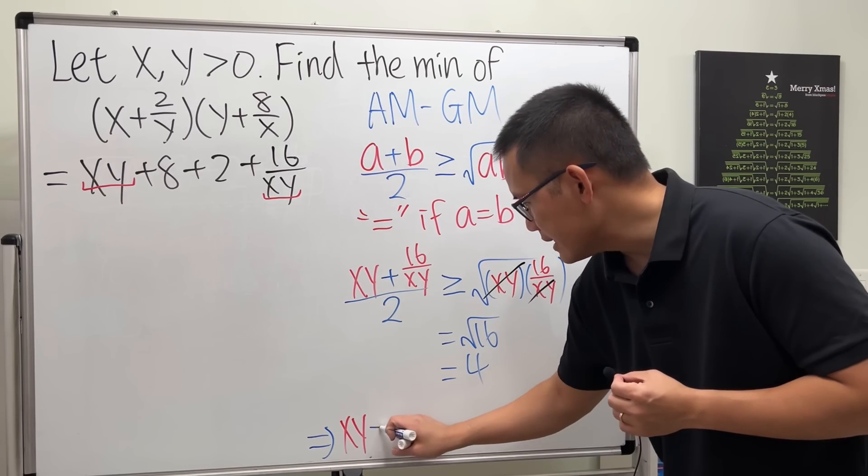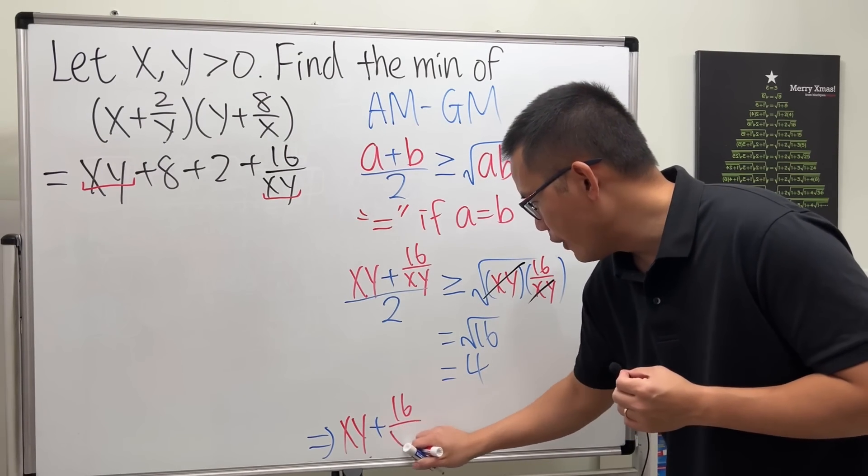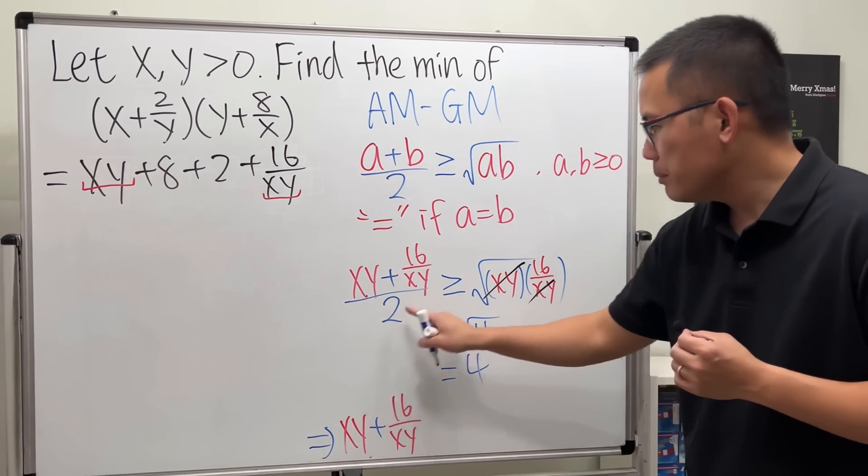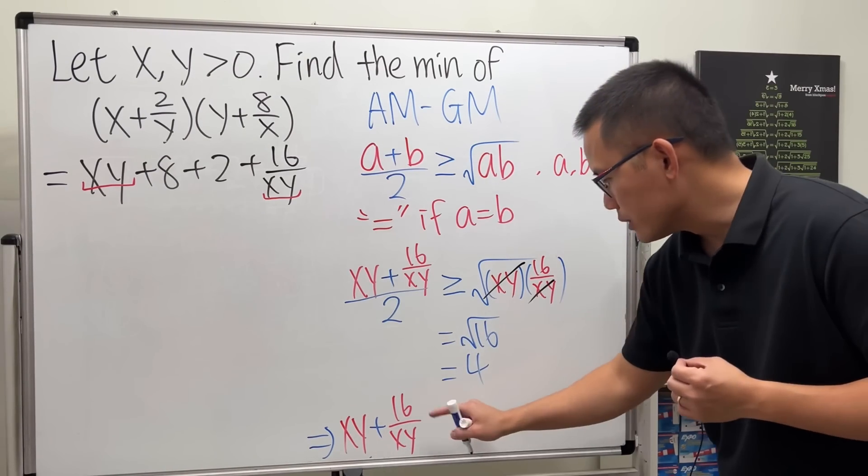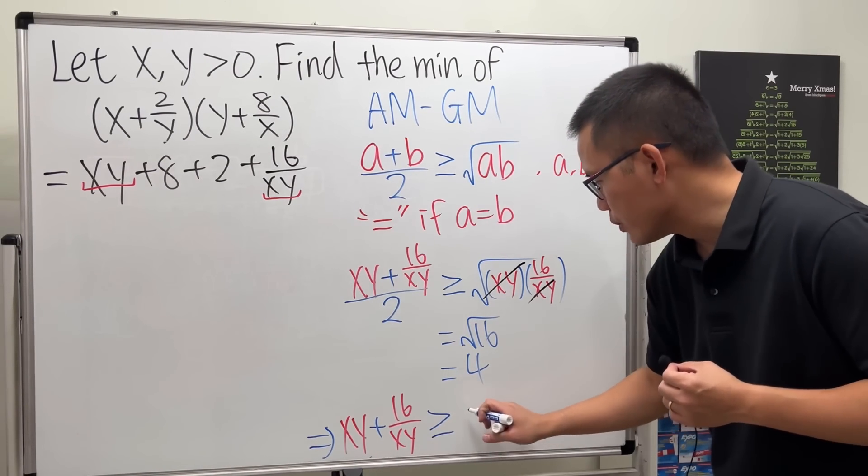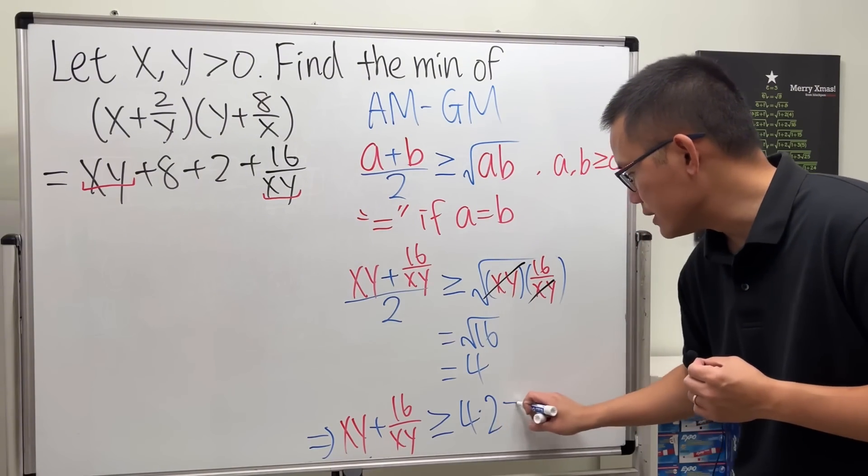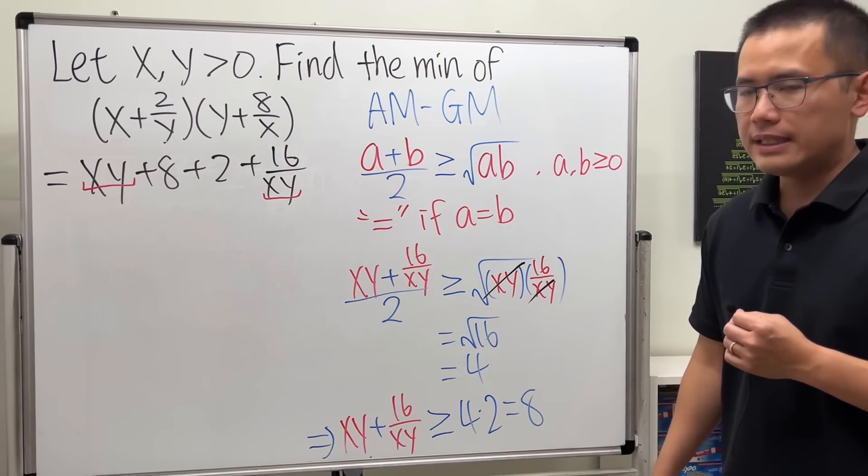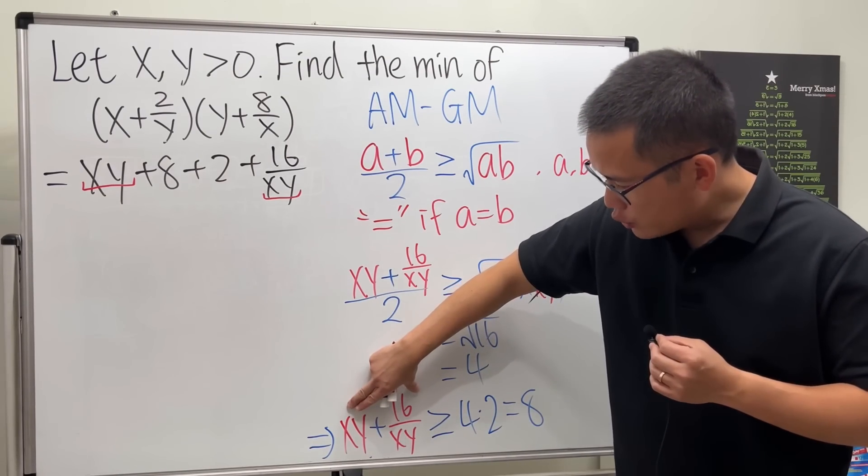So if you look at this, we can say this implies that xy plus 16 over xy—by multiplying 2 to both sides—we know this will be greater than or equal to 4 times 2, which is equal to 8.